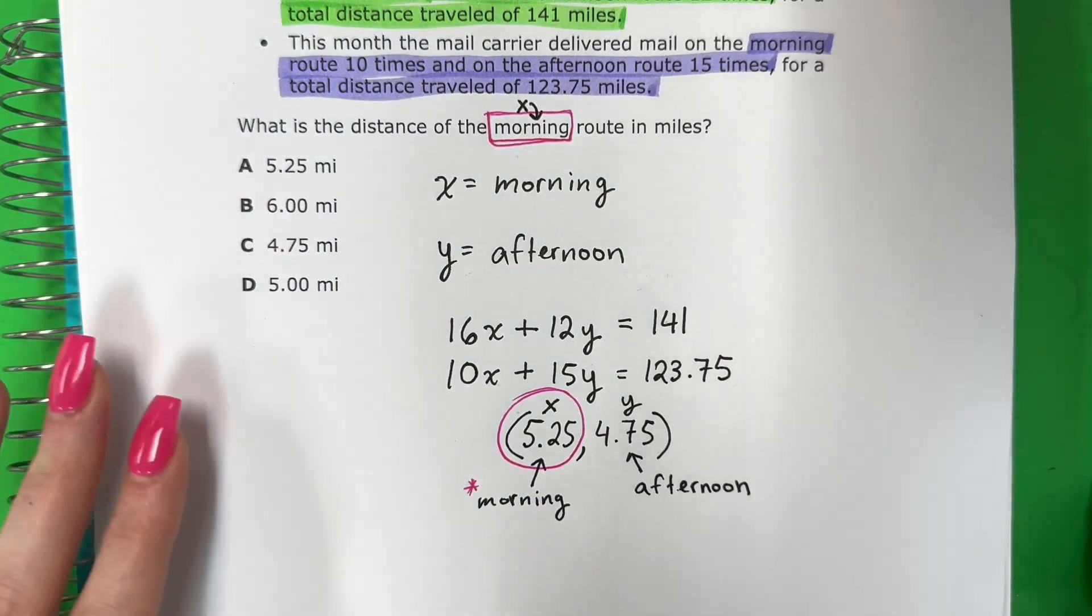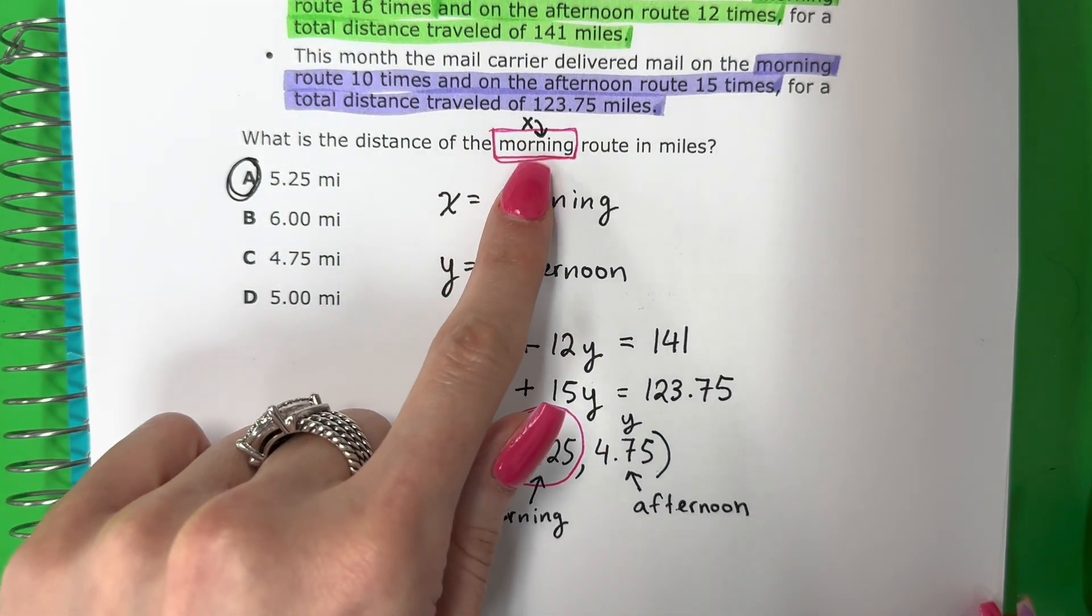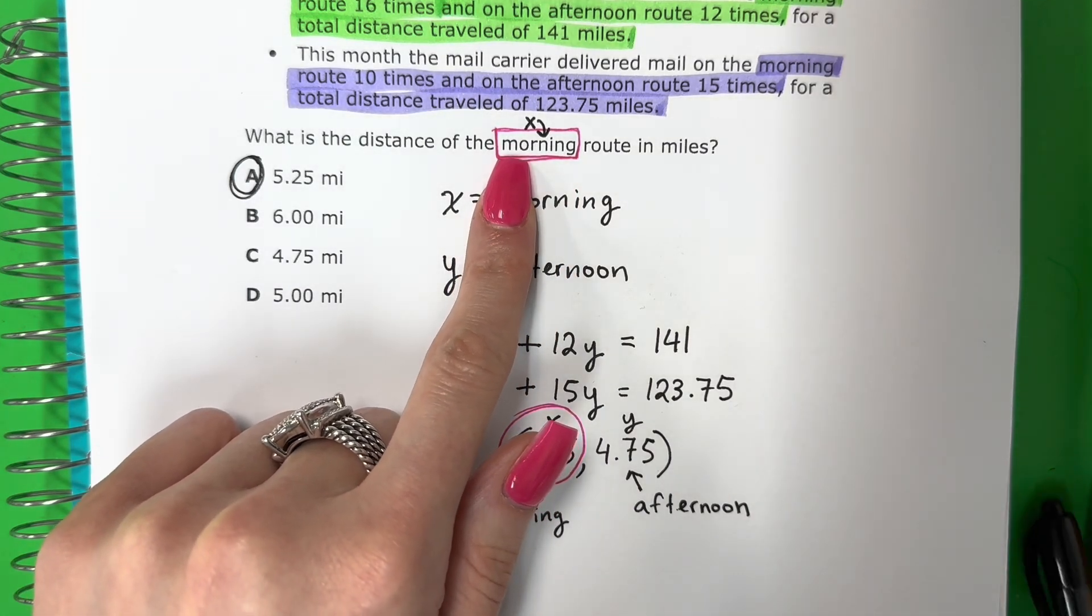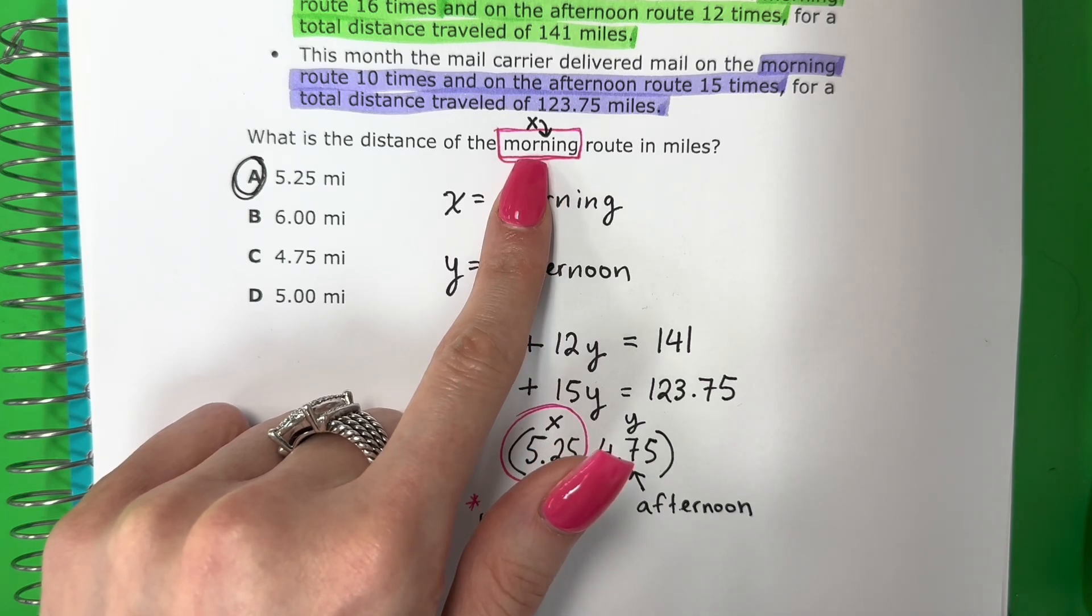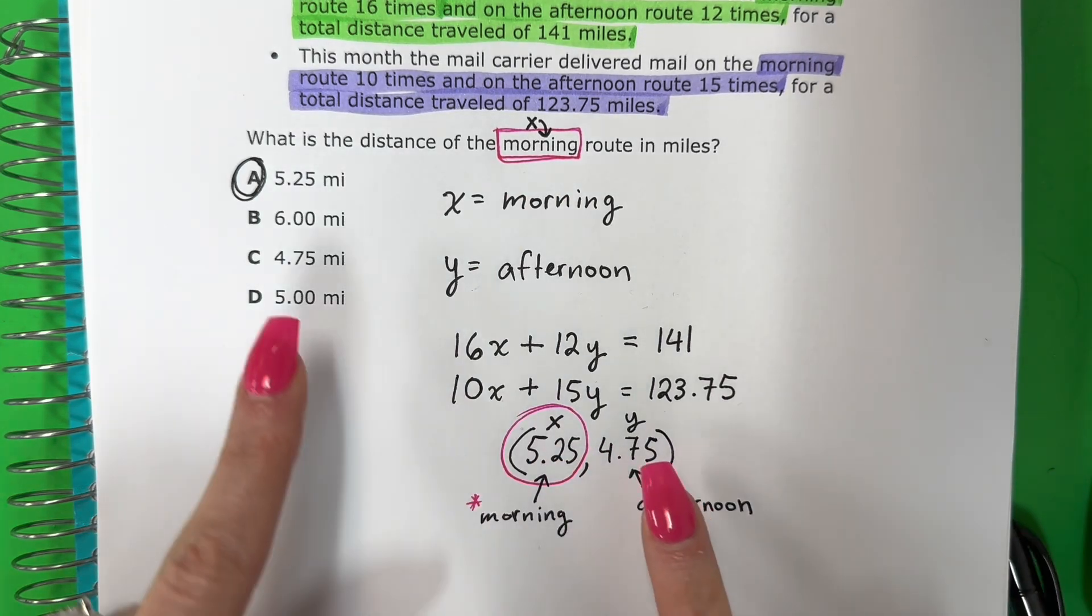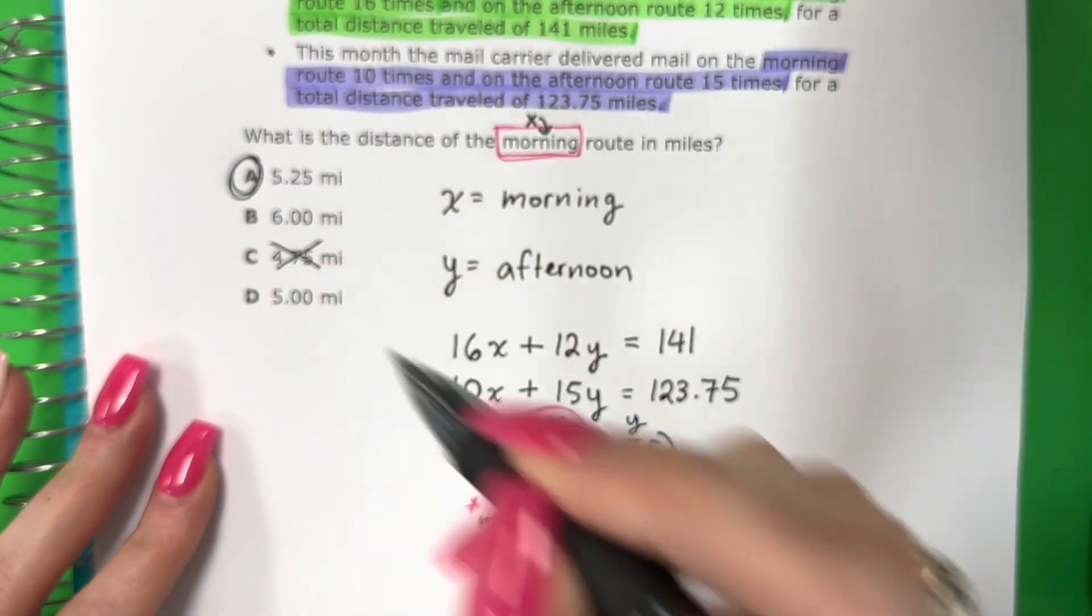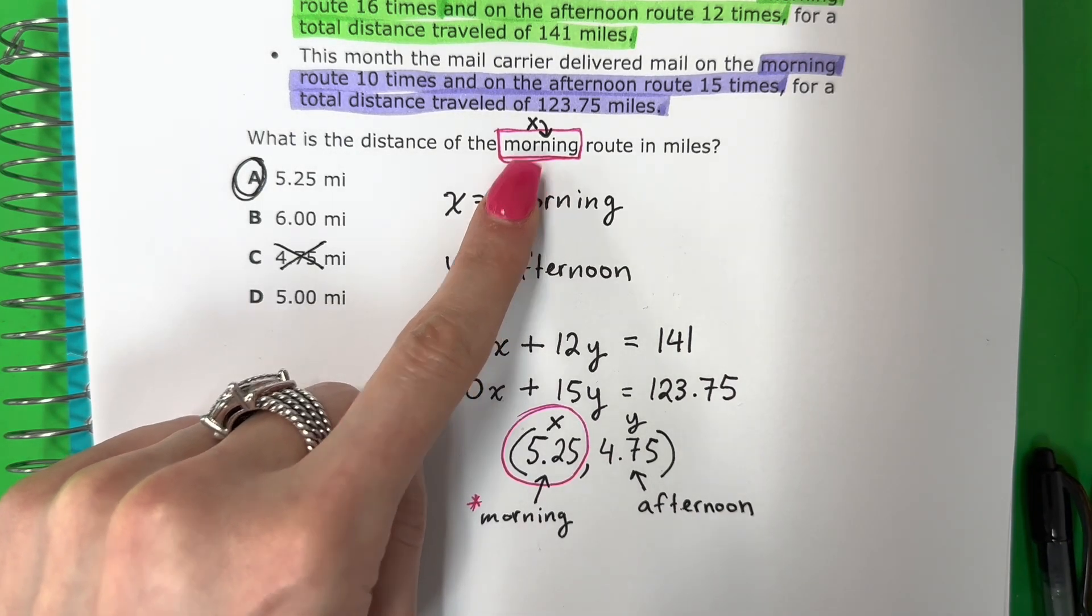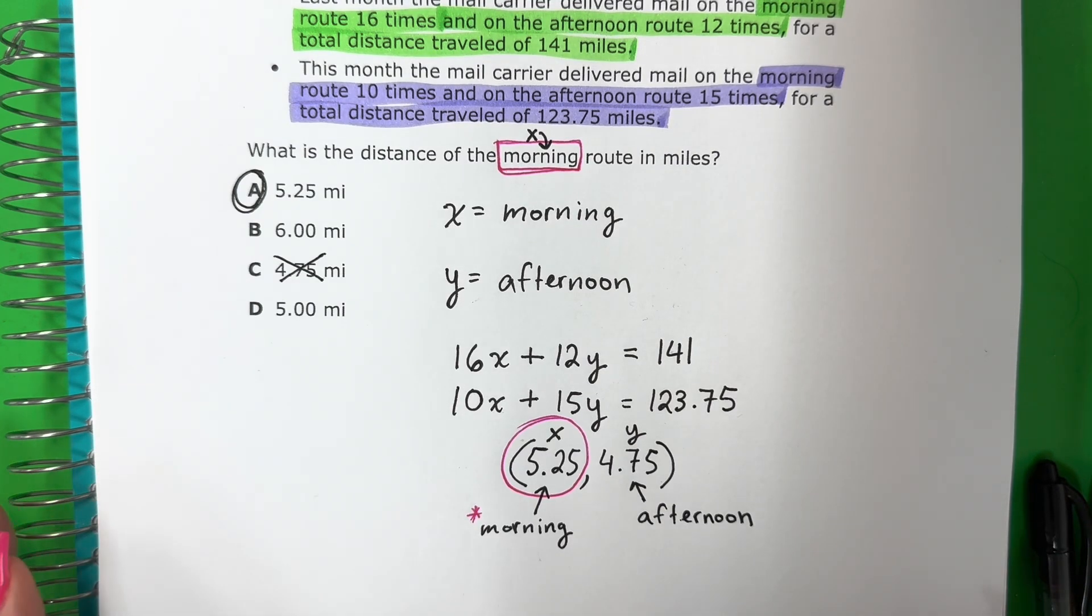So my answer is A. Mi respuesta es A. 5.25. So you need to be very careful. Necesitan cuidar. Because you need to check what they're asking for in the question. Necesitan checar que están preguntando en la pregunta. See, this is available. Esta está disponible. But that is not the correct answer. Pero no es la respuesta correcta. Because I want morning. Porque quiero mañana. I don't want afternoon. No quiero la tarde. Anyways, thank you for watching. If you liked the video, please give it a like. Leave a comment and subscribe.